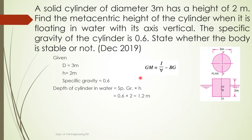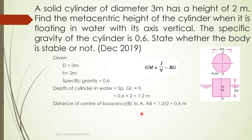To find V̄, we first need the depth of immersion, which is found using: specific gravity × total height of the cylinder = 0.6 × 2 = 1.2 meters. So from the water level to the bottom of the body the depth is 1.2 meters. The center of buoyancy B is at the midpoint of the immersed depth, so the distance AB = 1.2 / 2 = 0.6 meters, where A is taken as the reference point at the bottom of the body.